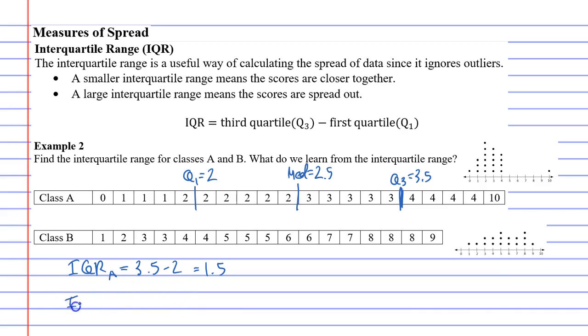Okay, so now let's find the interquartile range for class B. So if we find the halfway mark, one, two, three, four, five, six, seven, eight, nine, ten, eleven, twelve, thirteen, fourteen, fifteen, sixteen, seventeen.